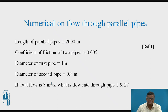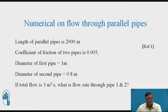Now let us consider the numerical. For parallel pipes, the head loss remains the same in all branches: 4FL·V²/(2GD) for branch one equals 4FL·V²/(2GD) for branch two, and similarly for other branches. The given data: length of parallel pipes = 2000 m, coefficient of friction for both pipes = 0.005, diameter of first pipe D1 = 1 m, diameter of second pipe D2 = 0.8 m, total flow Q = 3 m³/s. Find the flow rate through pipe one and pipe two.